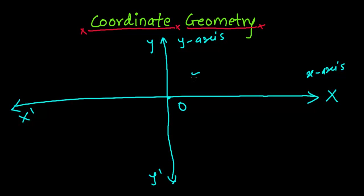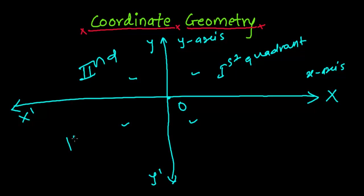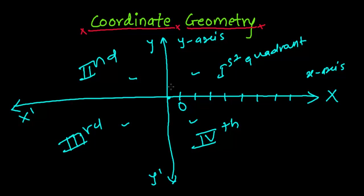When two lines intersect each other, there is a formation of four quadrants. This is called the first quadrant, this is the second quadrant, this is the third quadrant, and this one is the fourth quadrant. Now when you see this in a graph, it shows equal intersections — equal parts like this.